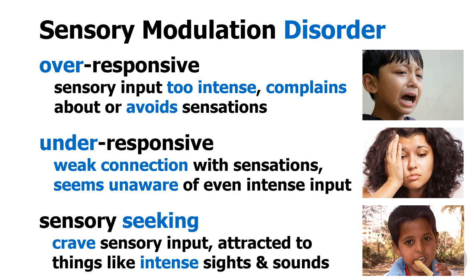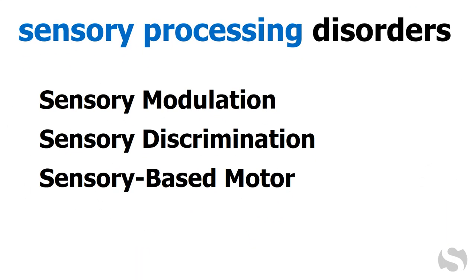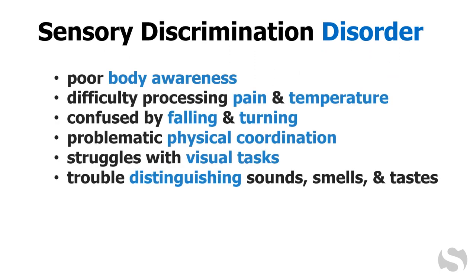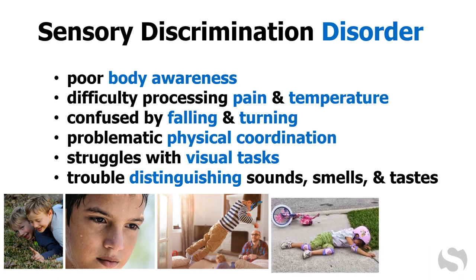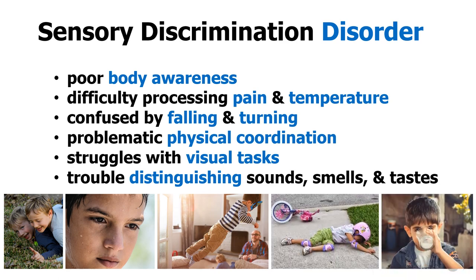Sensory seekers may also be drawn to intense sights, such as fast-moving objects or bright light. Now let's take a look at the second type of sensory processing disorder. Sensory discrimination disorder has many symptoms, such as poor body awareness, including not being aware when touched, and difficulty processing pain and temperature, both inside and outside the body, as well as being confused by the sensations of falling and turning.